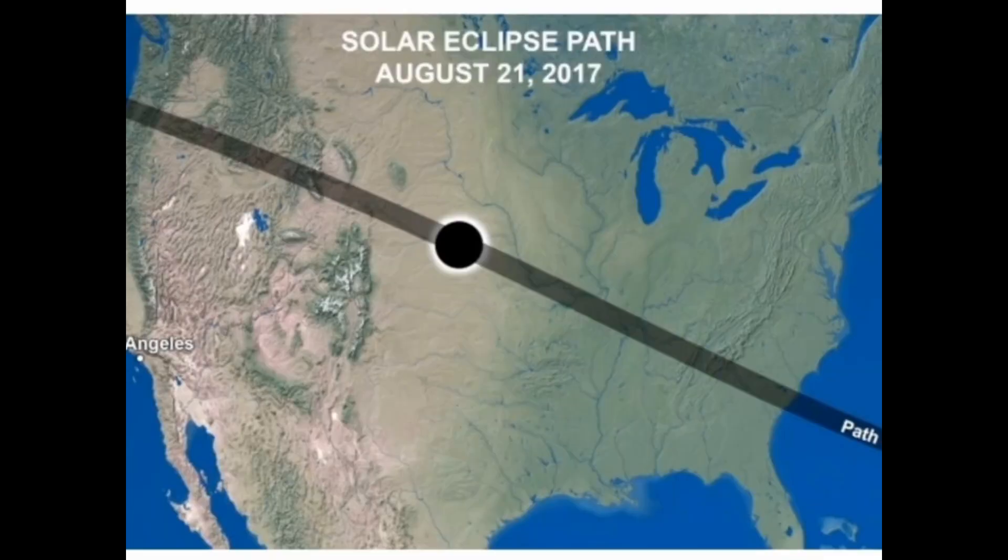The shadow is roughly 70 miles wide on the ground. That means the moon can't be bigger than 70 miles. Because one of the laws of shadows is you can't cast a shadow smaller than the object that's casting it. The moon is supposed to be 2,000 miles wide. So there's a problem for the globe, another problem.